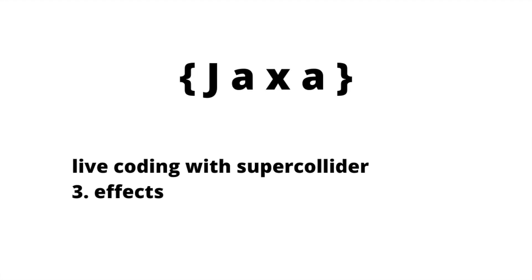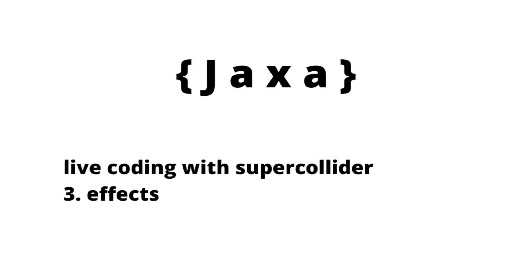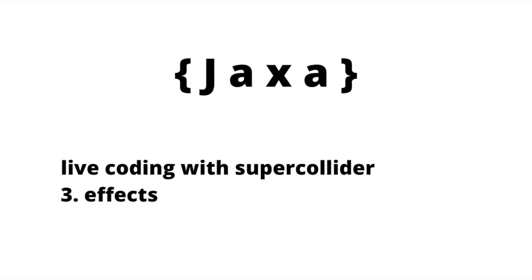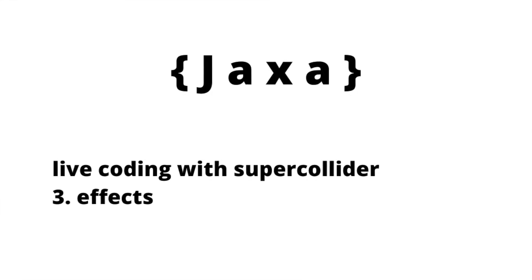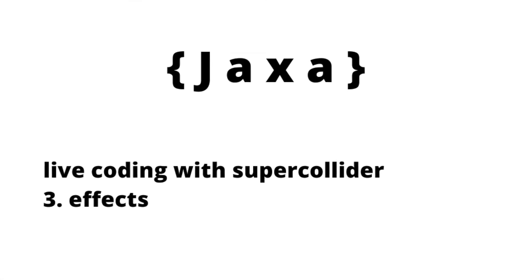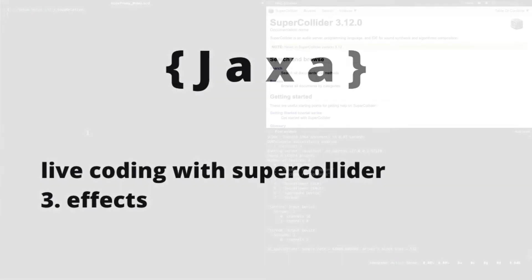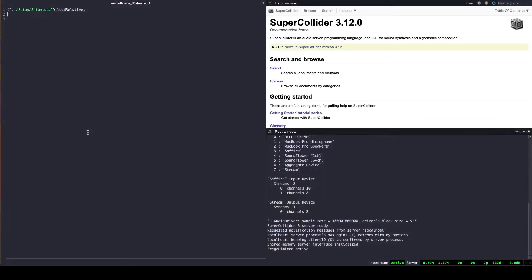Hello. In the previous videos we've covered the basics of live coding with SuperCollider and we have created a setup file that, among other things, allows us to load sound files in synth definitions and set up the basics for a smooth musical start, or restart. This time I want to talk about adding effects to a node proxy.